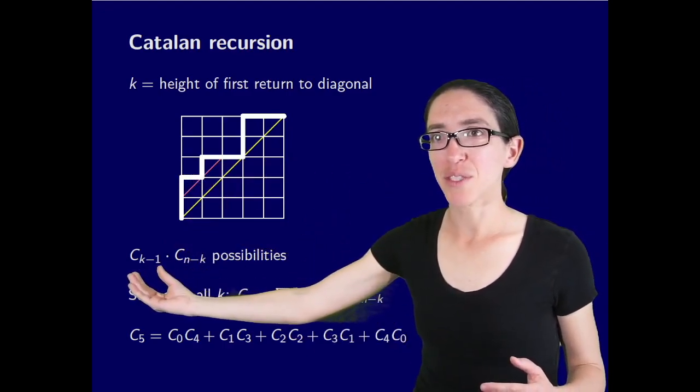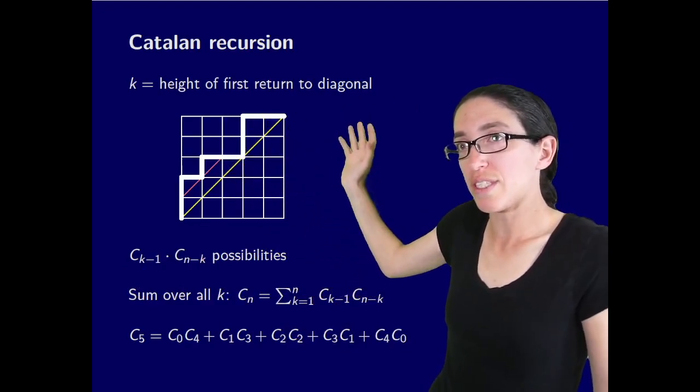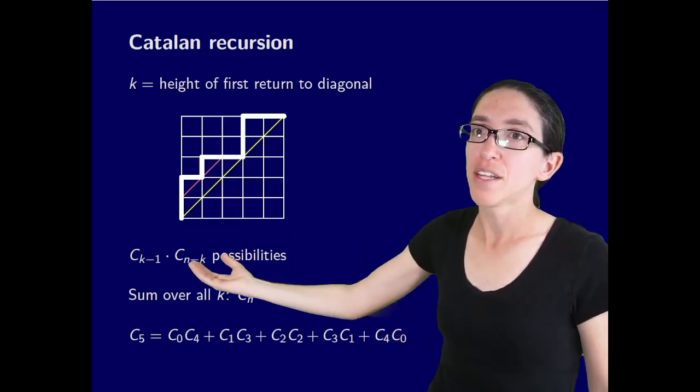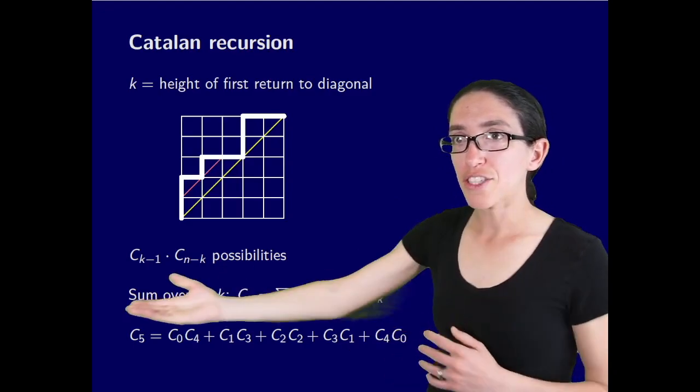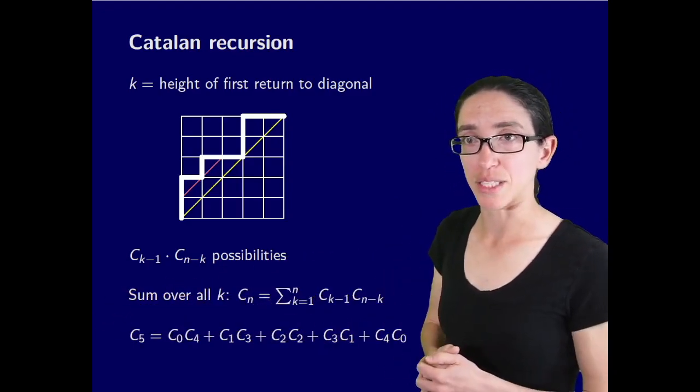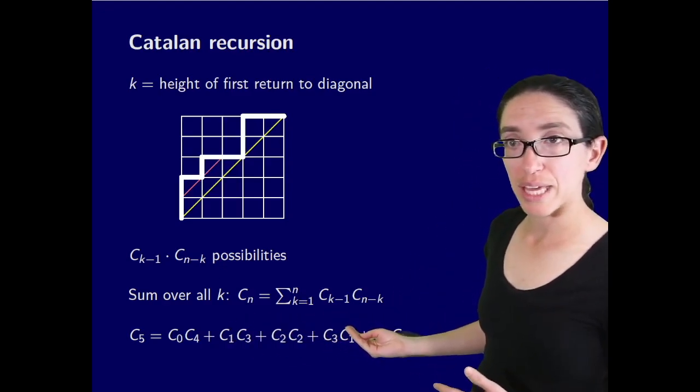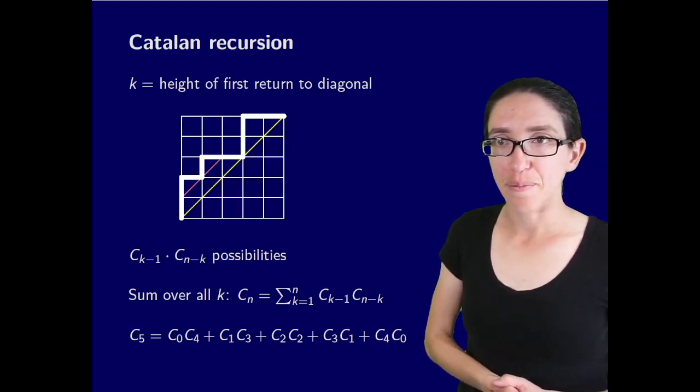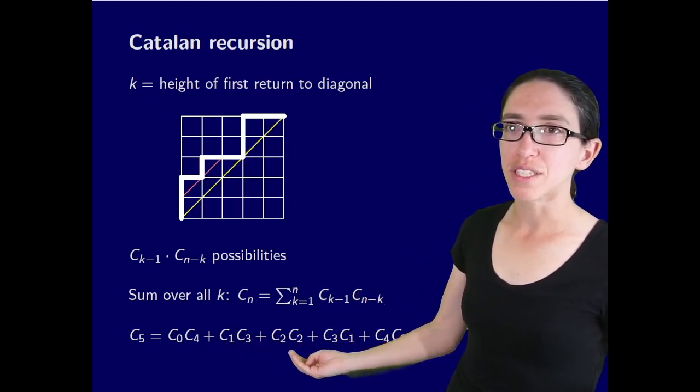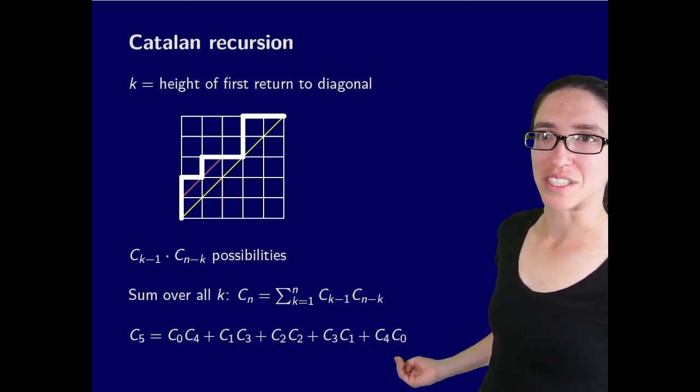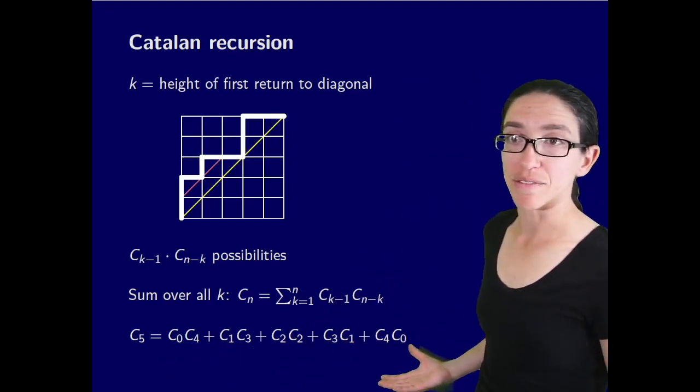So we have C sub k minus 1 ways of getting to point k comma k and then C sub n minus k ways of doing the rest of the sequence. So for each k we have C sub k minus 1 times C sub n minus k possibilities and we sum this over all k. So C sub n is the sum as k goes from 1 to n of C sub k minus 1 times C sub n minus k. Here's an example in practice: C sub 5 is C0 C4 plus C1 C3 plus C2 C2 plus C3 C1 plus C4 C0. You take all the ordered pairs that add up to 4 which is 1 less than 5.